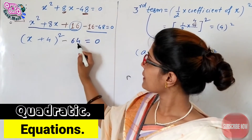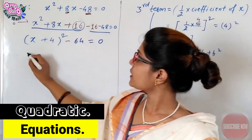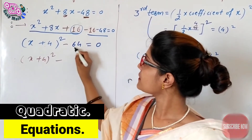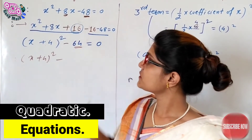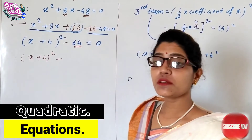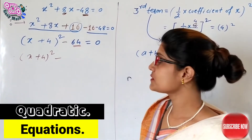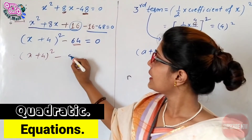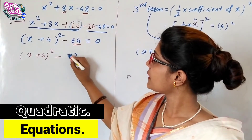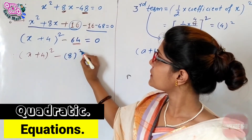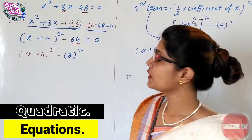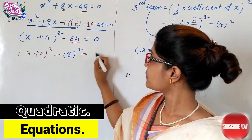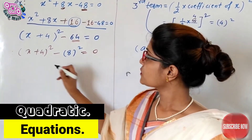This is now in the form a squared minus b squared. We have (x + 4)² minus 64. Since 64 is the square of 8, we can write this as (x + 4)² minus 8² equals 0.